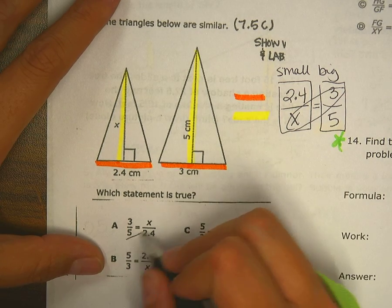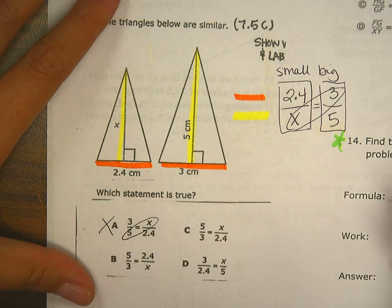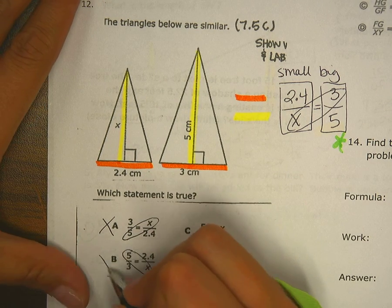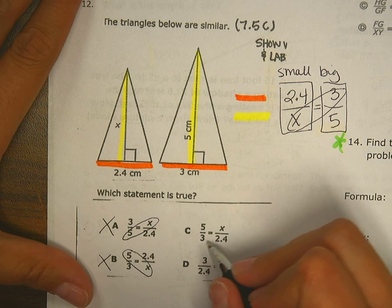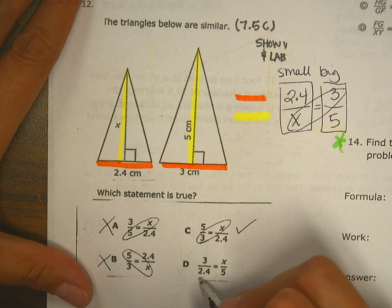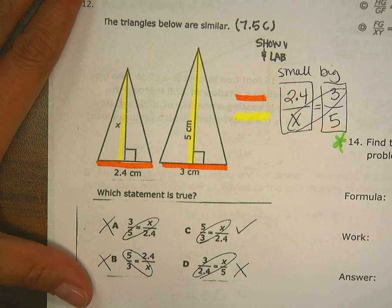So 5 and x are diagonal here, so I'm going to say no. 5 and x are diagonal here, so that's a no. So 3 and x are diagonal there, x and 2.4 are no.